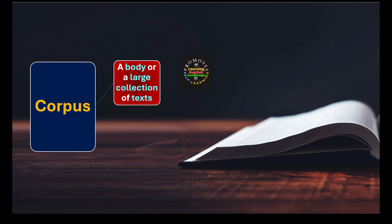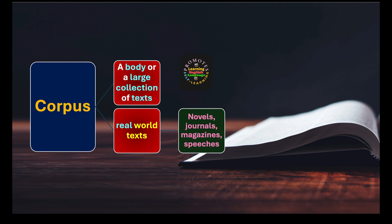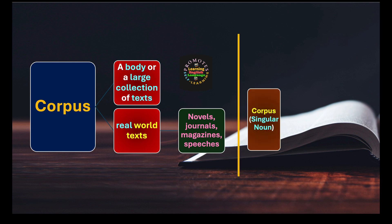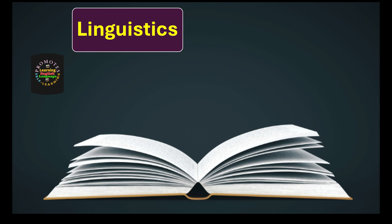Corpus is a body or large collection of texts, and these texts should be real-world texts. When we say real-world texts, it means texts generated by human beings in real situations — like writers who write novels, authors who write journals, create magazines, deliver speeches, and so on. These are real-world, real-life experienced texts. Corpus is a singular noun, and its plural form is 'corpora' or 'corpuses.'